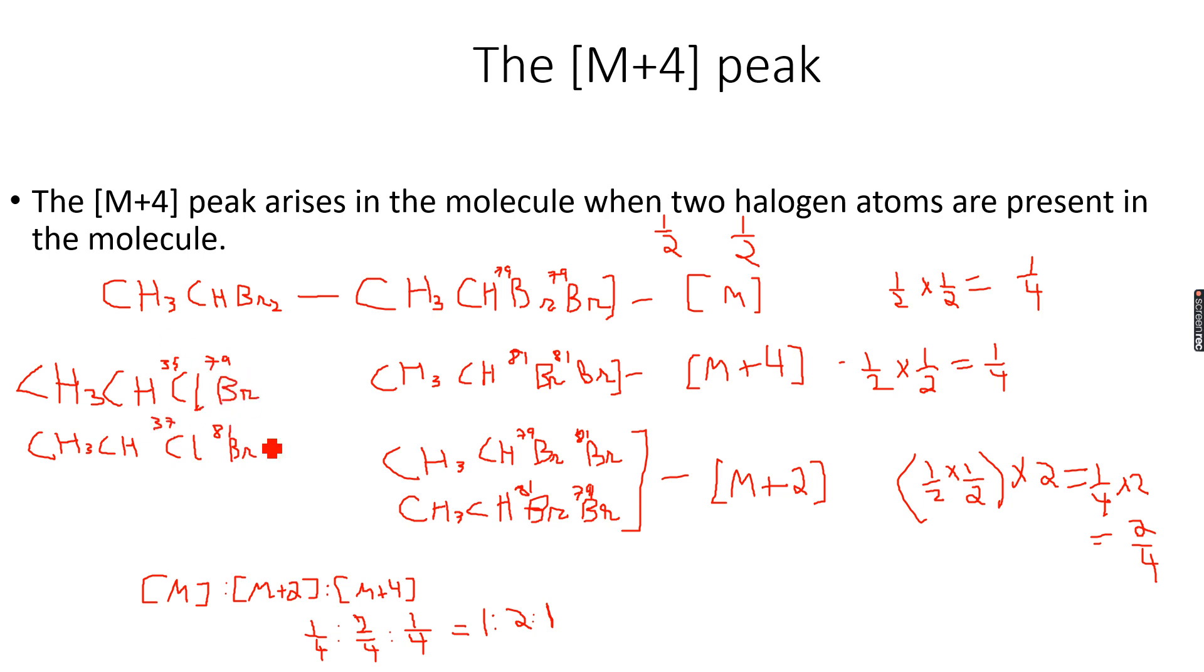These are both lighter isotopes; these are both heavier isotopes. CH3-CH-Cl35-Br81—this can be one light, so this will give me the M peak. This will give me M plus 4 peak because both heavier, and in this case both lighter. And then I can have CH3-CH...